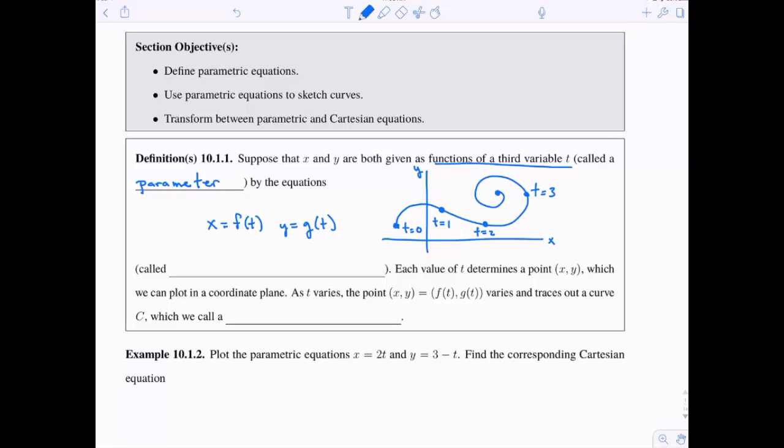So t equals 0, 1, 2, 3, and then maybe I'll make this final point t equals 4. So these are called parametric equations. This x equals f of t and y equals g of t. These are the parametric equations. And then as you can see, each value of t determines a point, a place on this curve, x, y.